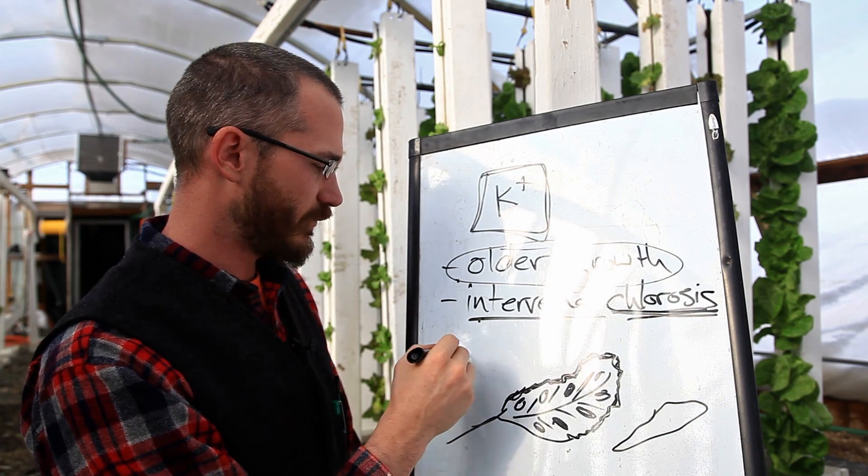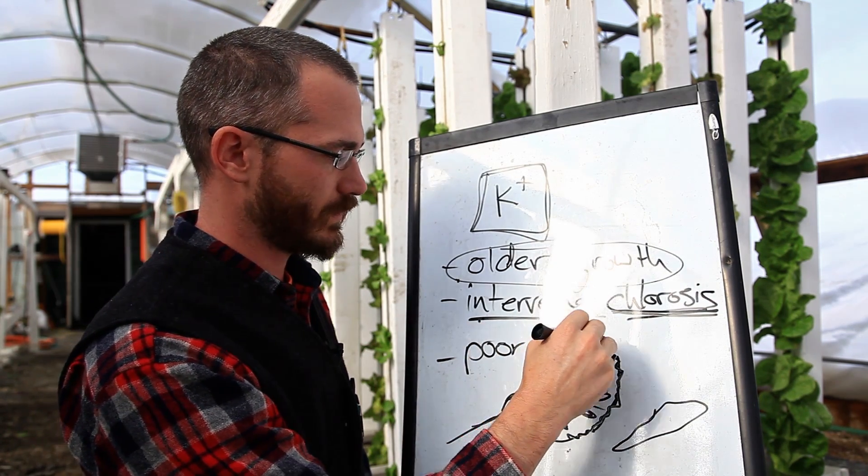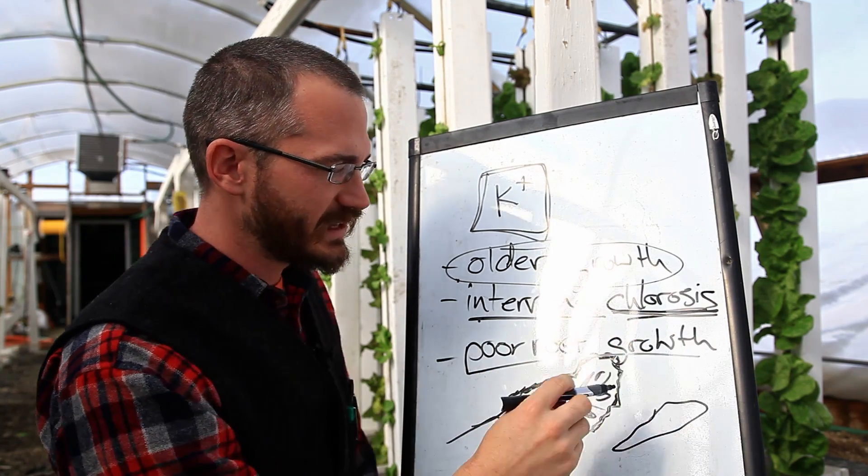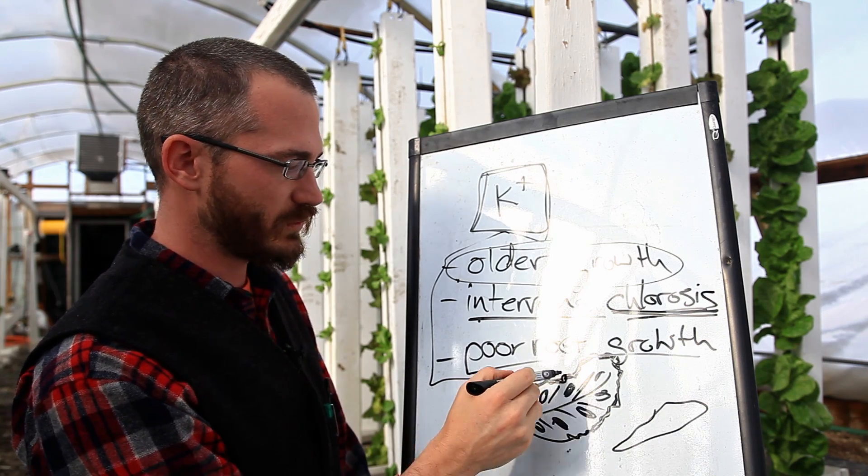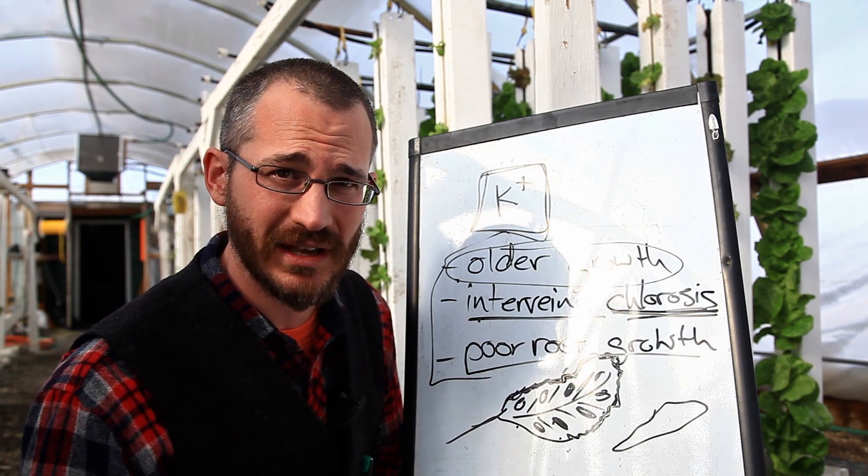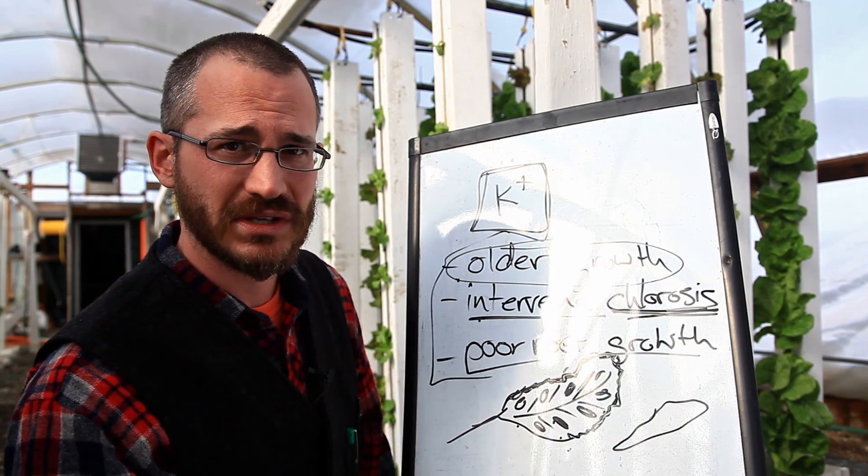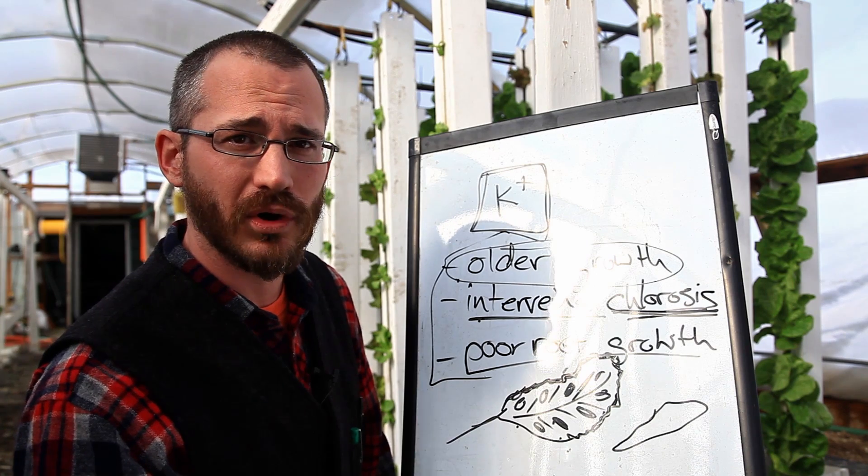Oftentimes potassium is a problem. So look for poor root growth as well. And at the end of the day, all of these factors, and there's a few more, we've got cupping, we've got burning, sometimes there's bronzing of the plant leaves.